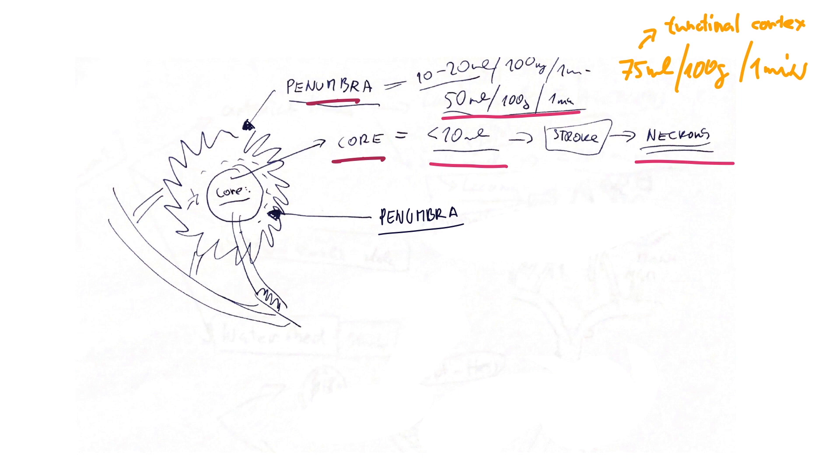In this place they will be dead—necrosis, no chance. So basically, as a doctor, you can't do anything with this part. The thing you can do—this is why you try to help the patient—is to save as many cells as you can. You should imagine there's an occlusion here, this is the core, and then there are other branches supplying the area.